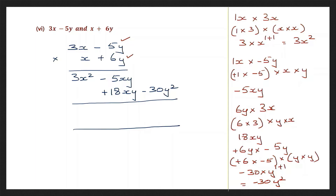Let's do the x squared column — we have 3x squared. Moving to xy, we have minus 5 and plus 18: signs are different, so put the sign of the bigger number and subtract: 18 minus 5 is 13, giving 13xy, and here we have minus 30y squared.